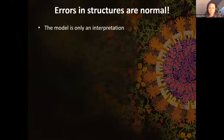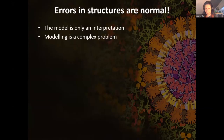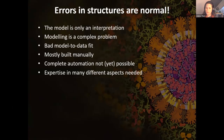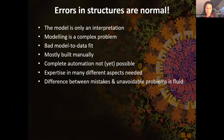Errors in structures are normal. The model is only an interpretation of the data - it is not the experimental outcome; it is the outcome of interpretation. Modeling is a complex problem: you have to measure the thing, process the data, and then model by hand. The model-to-data fit is so poor that we must build many models manually - automation is not yet completely possible. Expertise in many different aspects is needed: programs, chemistry, biology, function, protein biochemistry, special tools, and validation. And the difference between mistakes and unavoidable problems is very often fluid and often individual.